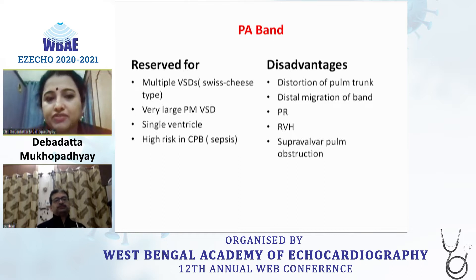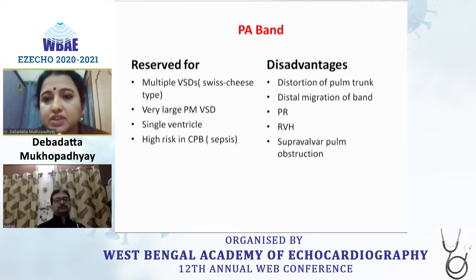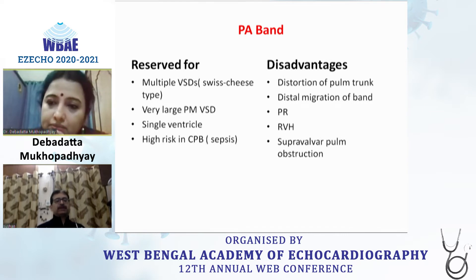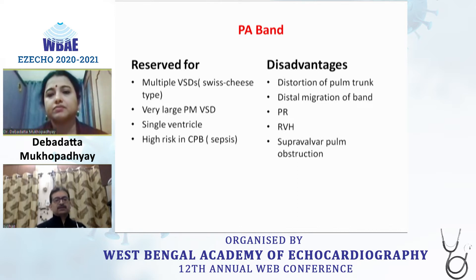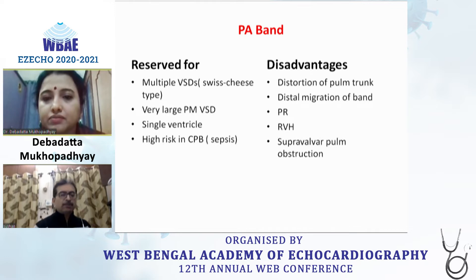PA banding is done for multiple Swiss cheese VSDs as shown, for very large VSDs like inlet VSDs, or for single ventricle complexes. The PA band always carries risks of distortion of the pulmonary trunk and distal migration. We have to be careful with timing — the time scale may be two to six weeks before taking it down. Sometimes after banding, some small VSDs may close down to reduce their number, but we have to be very careful not to cause complications rather than treating pulmonary arterial hypertension.